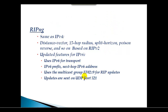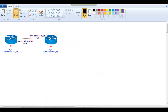RIPng uses UDP port number 521 for sending updates. When it comes to configuration, the theoretical concepts remain the same as RIPv2, but the actual configuration commands are different.